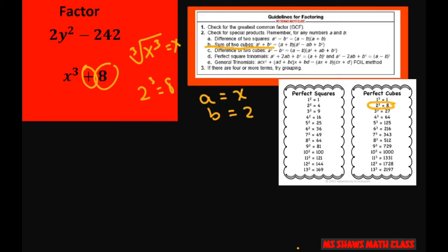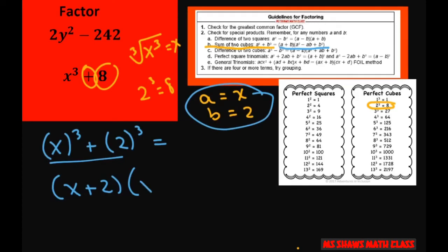Now following the formula, I have a cubed plus b cubed, so I'm going to write this as a cubed plus b cubed and fill in this formula. So we're going to do a plus b, so that's just x plus 2. Square your a, so that's x squared, minus multiply these two, so that's 2x, and then square your b. So 2 squared would be 4.